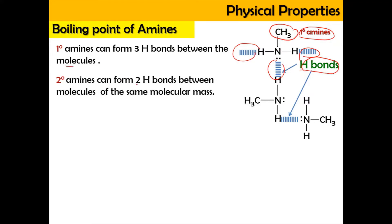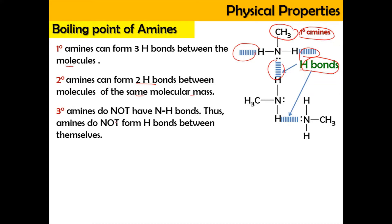Meanwhile, for the secondary amine, it can form two hydrogen bonds between molecules of the same molecular mass. Then for the tertiary amine, it does not have any N–H bond, so tertiary amines do not form hydrogen bonds between themselves. The nitrogen in tertiary amine is attached to R, R, and R, with no N–H bond available.